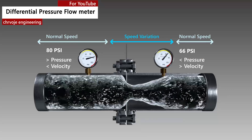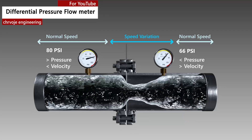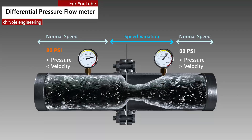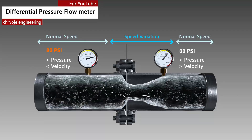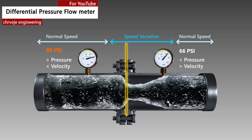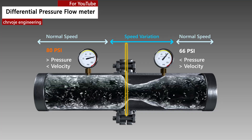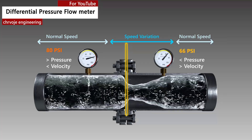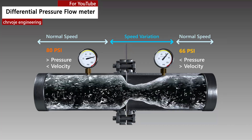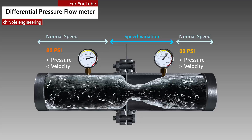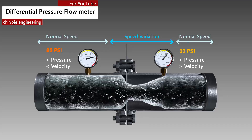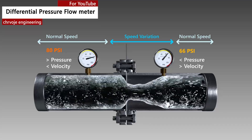As the fluid flow rate increases through the pipe, back pressure on the incoming side increases due to the restriction of flow created by the orifice plate. The pressure of the fluid at the downstream side of the orifice plate is less than the incoming side due to the accelerated flow.